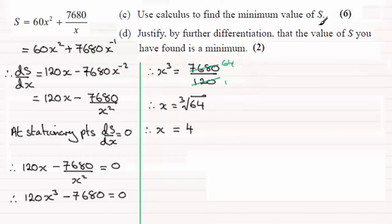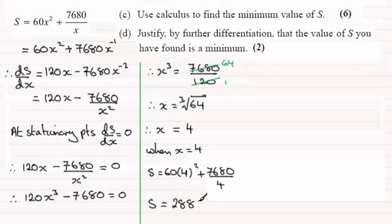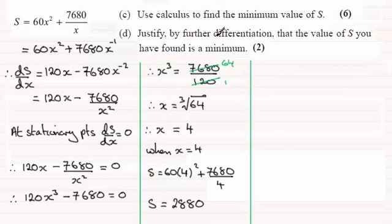Now we've got to find the value of S, so we substitute x equals 4 into the equation to get S. So S equals 60 times 4 squared plus 7680 divided by 4. Working this out gives S equal to 2880. That's our value of S, which is supposed to be the minimum, but we're not really in a position to confirm it's the minimum yet — and that's where part D comes in.